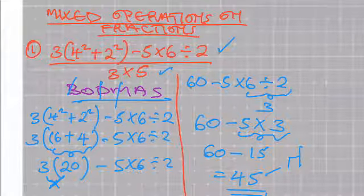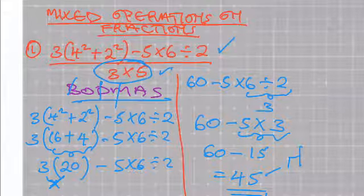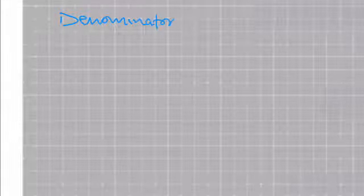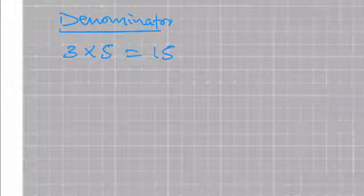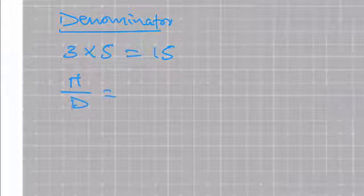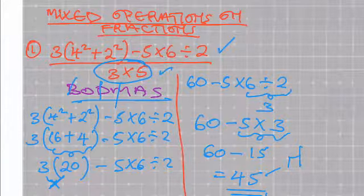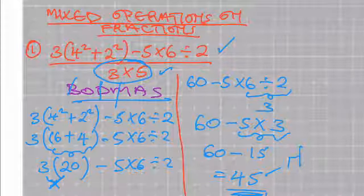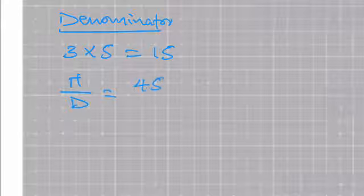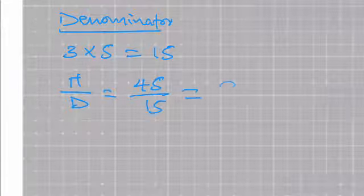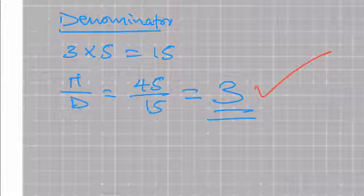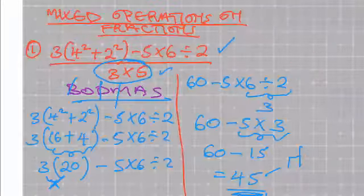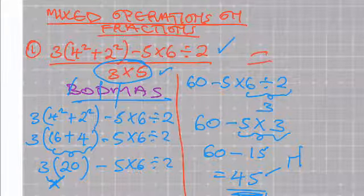We come to the denominator, which is 3 times 5. For the denominator I will only have 3 times 5, which gives me 15. So when I put them together — numerator over denominator — remember the numerator is 45, so I will have 45 over 15, which gives me an answer of 3. You should get 3 as your final answer.